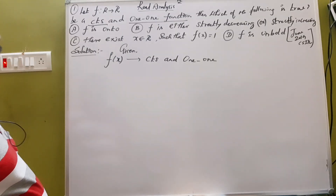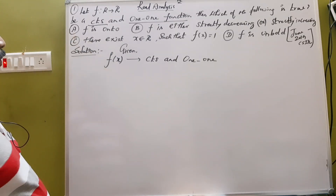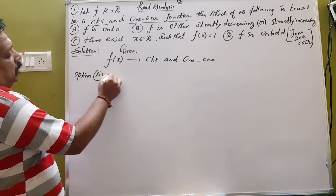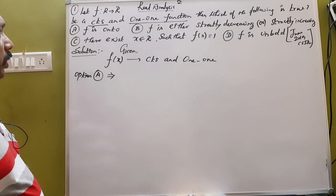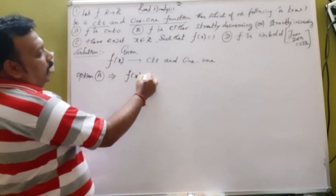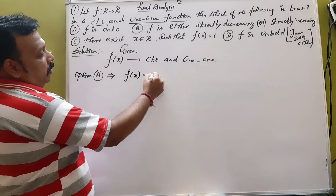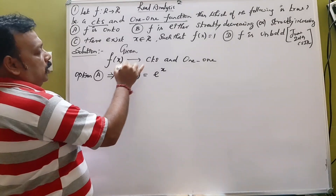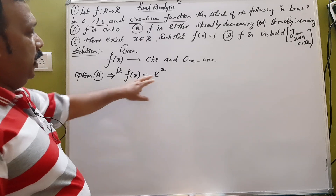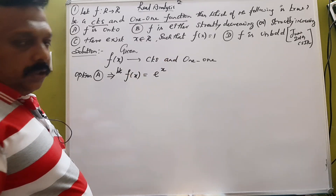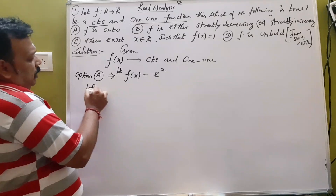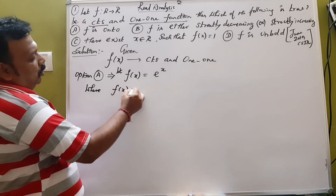Now the first option is: F is onto. Let's check option A. F of X is a continuous and one-to-one function. Then we use e^x. Let's assume — the second condition is continuous and one-to-one. If you use e^x for a one-to-one function, this is continuous and one-to-one. Let's check this one-to-one function. F of X is equal to 0. This is a real function. The real number is 0.